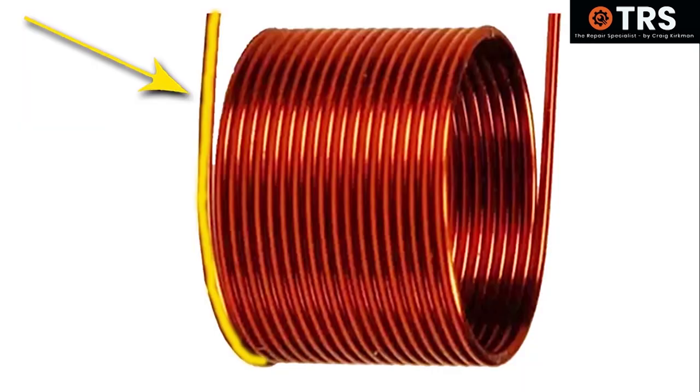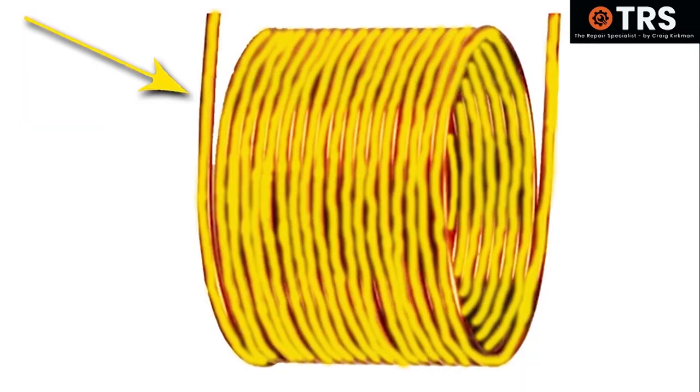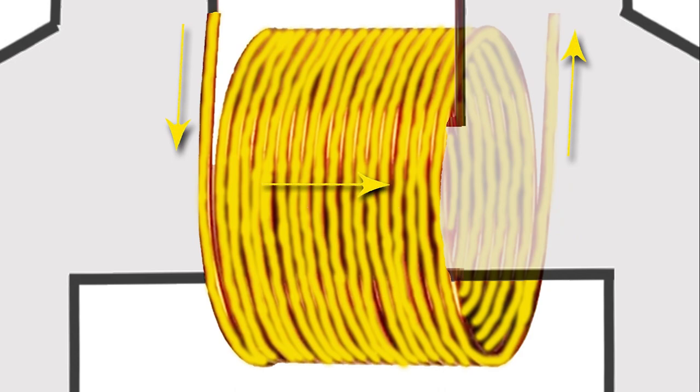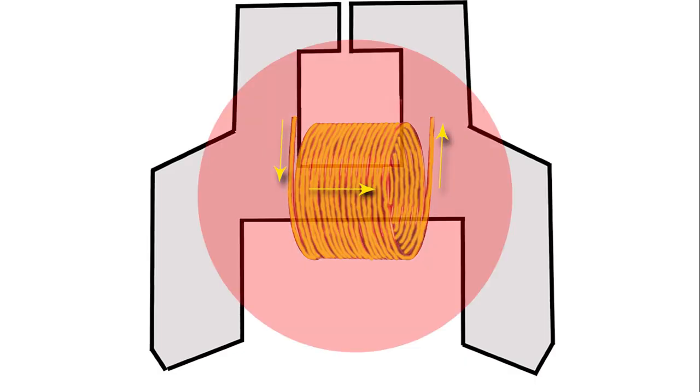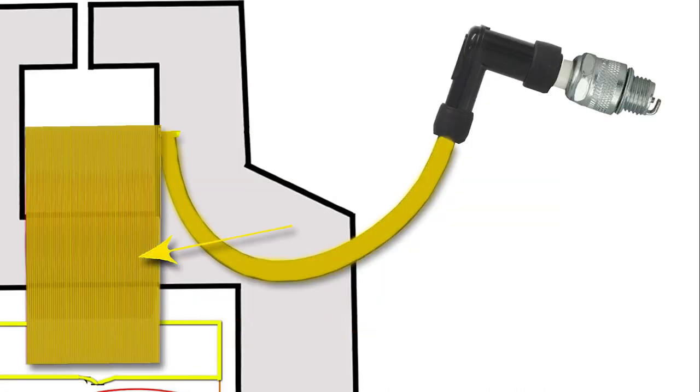This shorting across of the current means that the current would no longer be flowing through the coil like this as it should be, which it needs to do to produce an efficient electromagnetic field, which I've explained in more detail in the full length video. And so not producing a sufficient electromagnetic field means that there's insufficient current to produce a spark in the spark plug, and therefore the coil has gone bad.